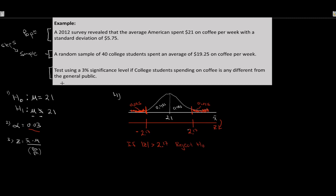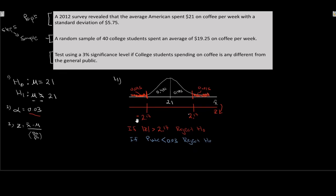We can express the decision rule two ways: if the absolute value of the calculated z is greater than 2.17, we reject the null; or, if the p-value is less than our significance level of 3%, we reject the null. Writing both explicit decision rules is worth one mark on a test.